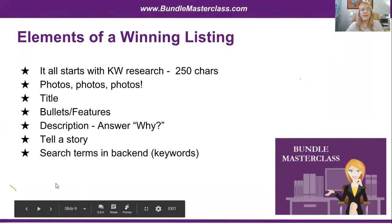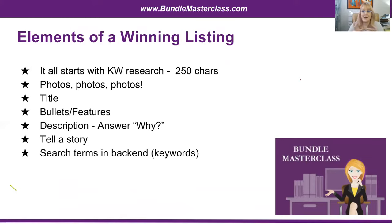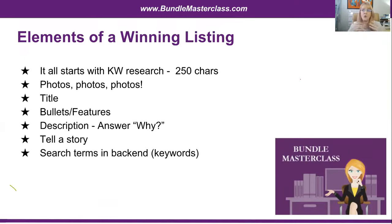What are the elements of a winning listing? It all starts with keyword research. Amazon just locked down how many characters you can use in the search term field in your listing — don't use commas, just use spaces, and don't duplicate keywords. Use your highest-volume keywords first in your title, then in your bullet points, then in the description, and put everything else in the keyword search term field in the backend.